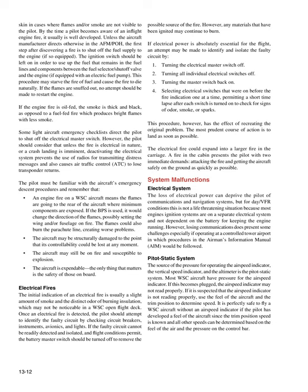The pilot must be familiar with the aircraft's emergency descent procedures and remember that: an engine fire on a WSC aircraft means the flames are going to the rear of the aircraft where minimum components are exposed. If the BPS is used, it would change the direction of the flames, possibly setting the wing and/or fuselage on fire; the flames could also burn the parachute line, creating worse problems. The aircraft may be structurally damaged to the point that controllability could be lost at any moment. The aircraft is expendable — the only thing that matters is the safety of those on board.